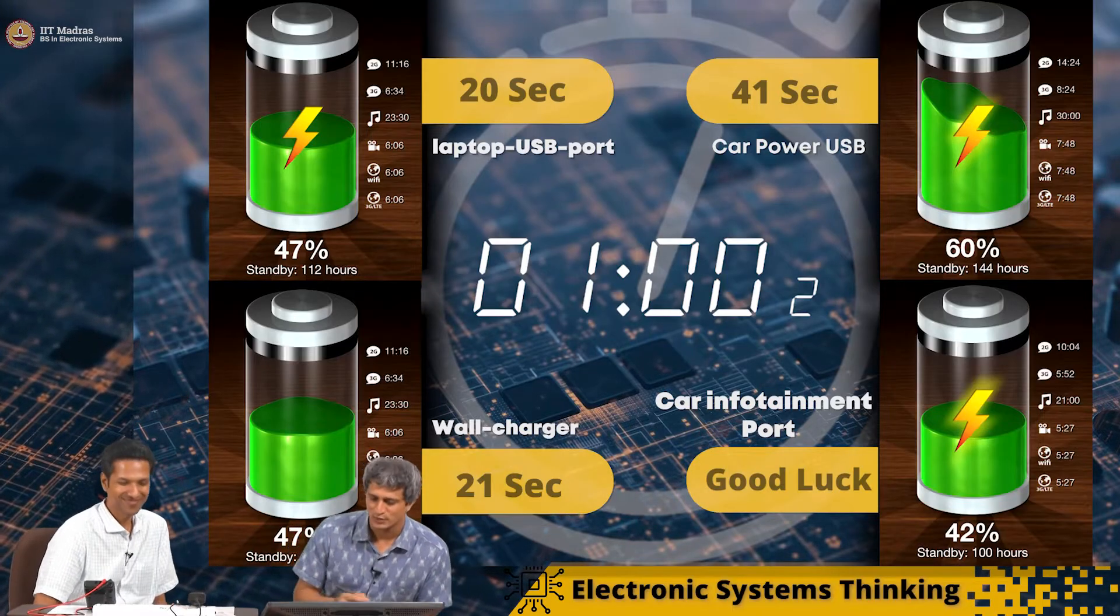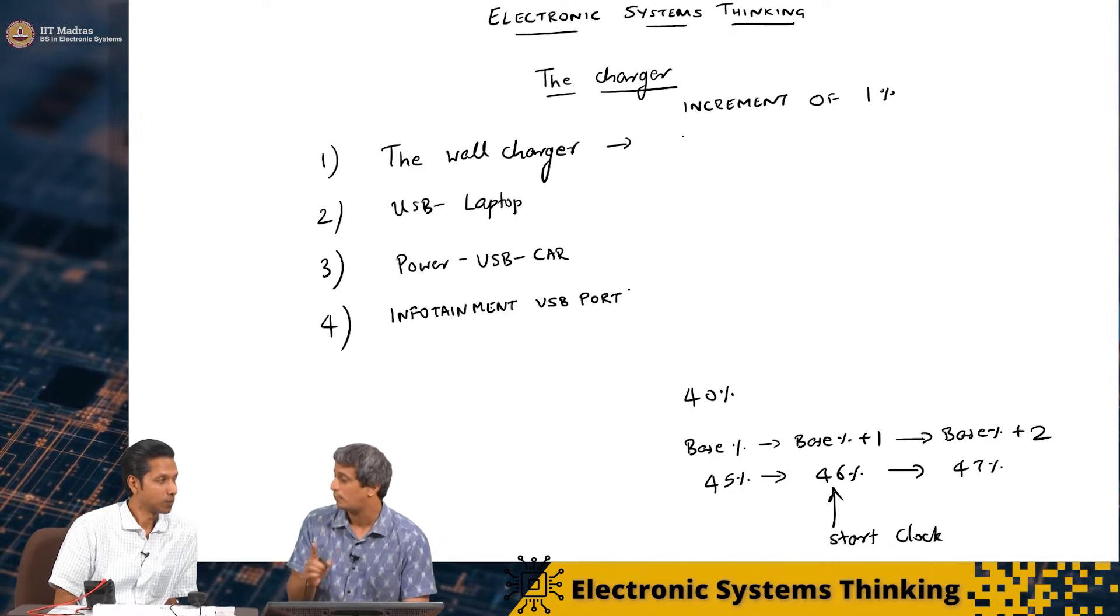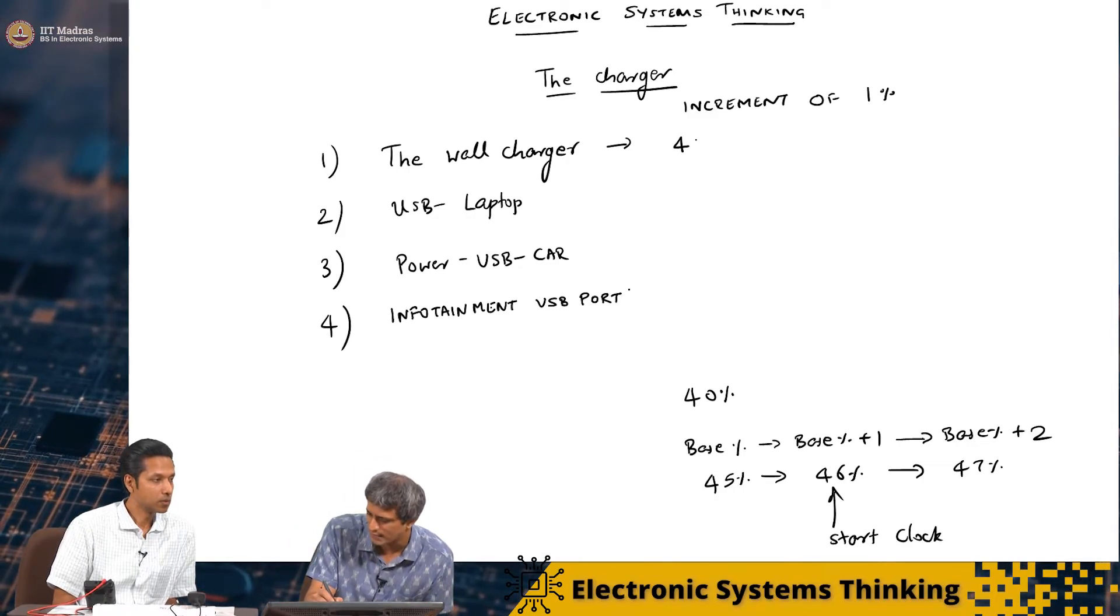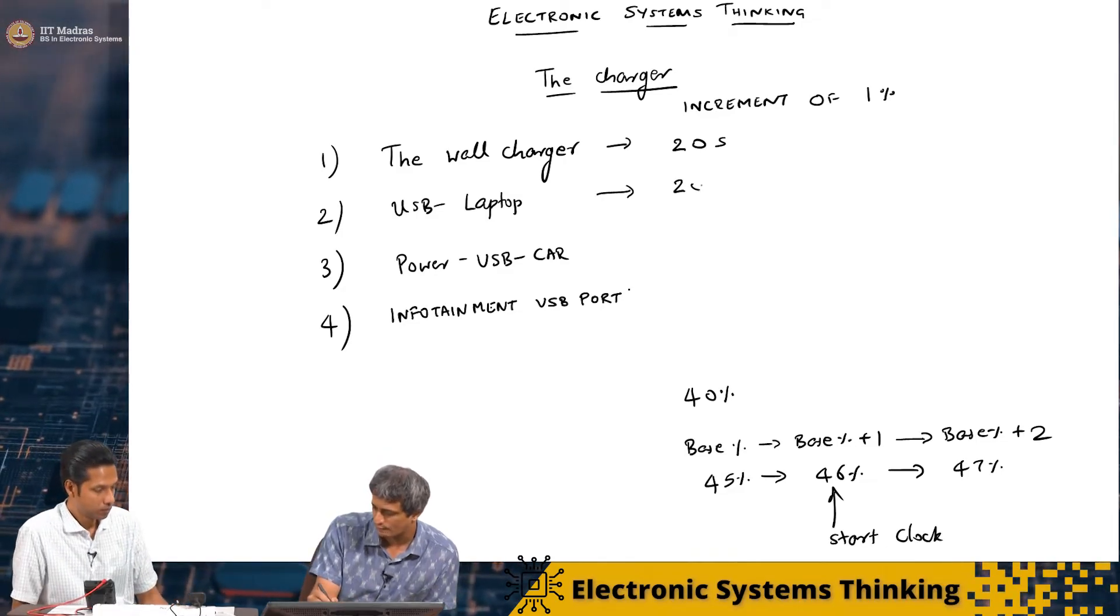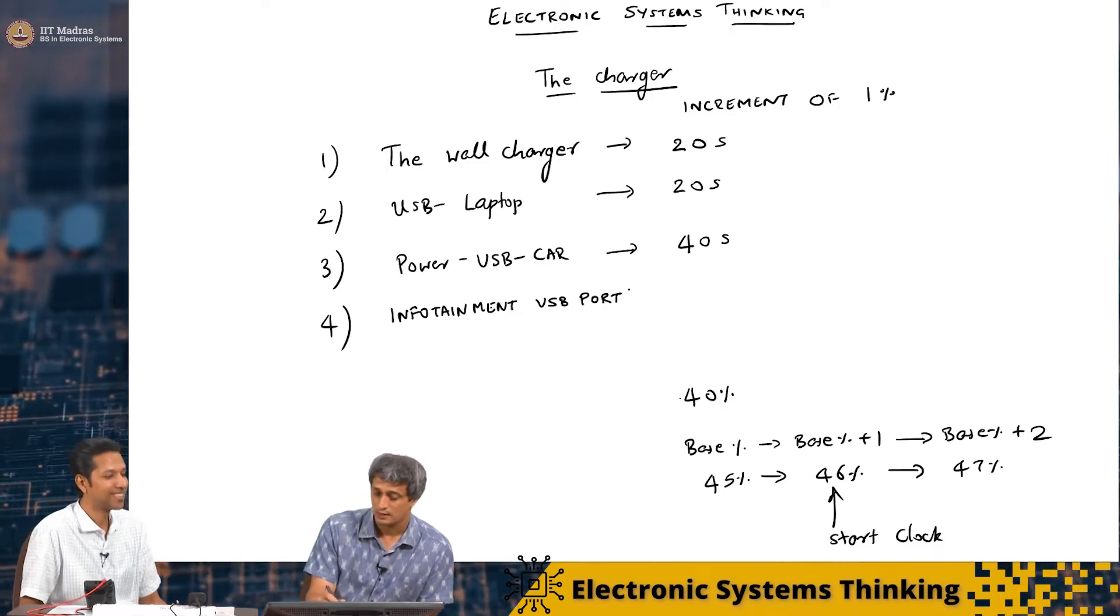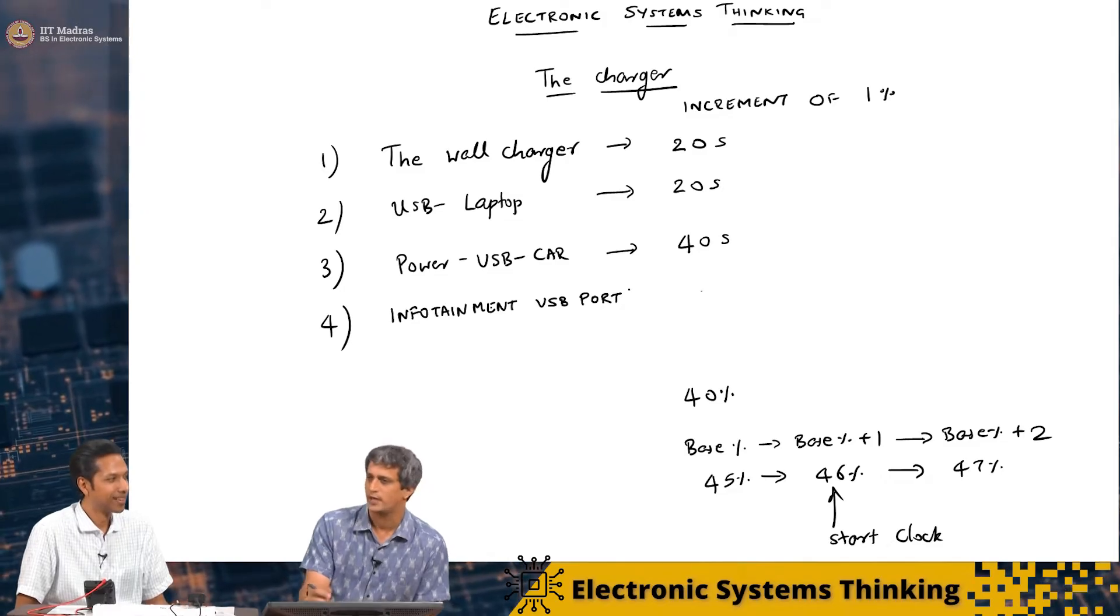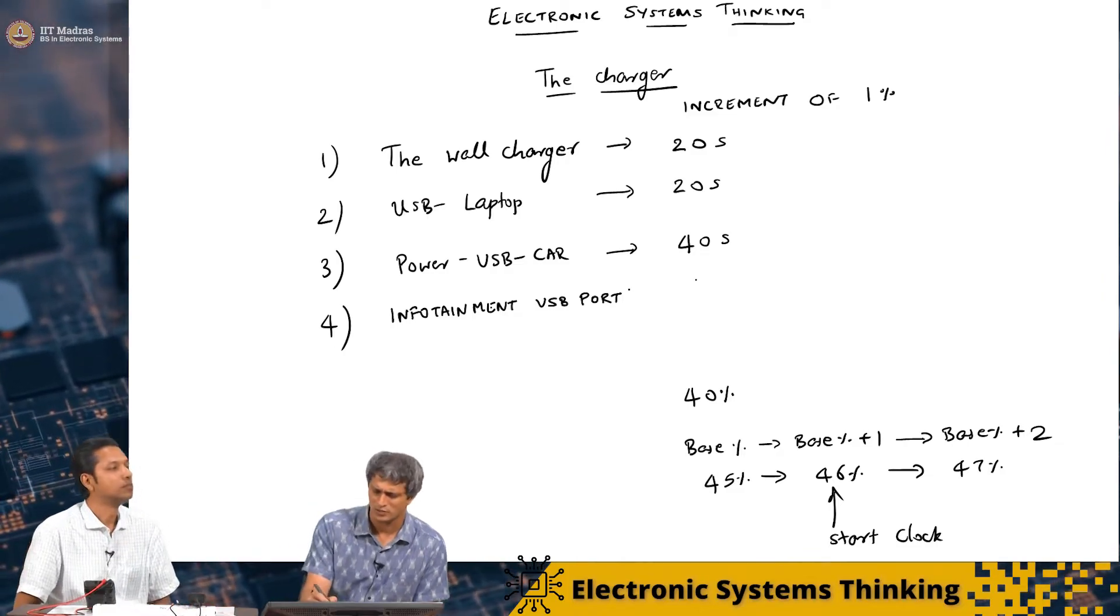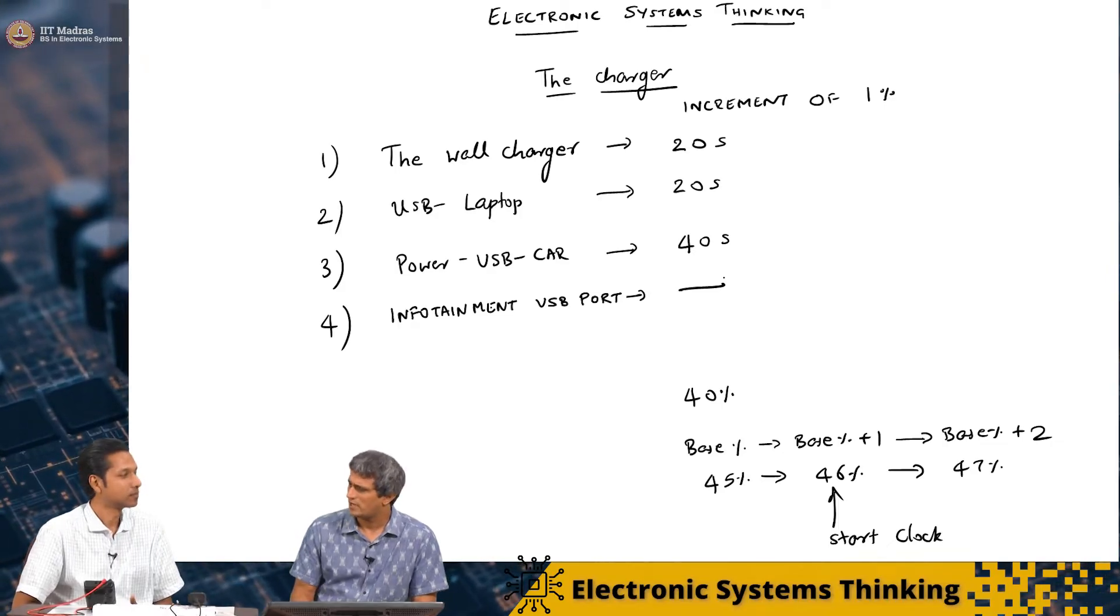And we have got our results back. So what we have is the wall charger was able to charge my mobile—remember it's the same mobile, same battery, nothing else is changing when I go from one charger to the other. It took about, let's not worry about the second decimal, 20 seconds. Likewise the USB on the laptop also took 20 seconds to charge. My power USB from the car took 40 seconds to charge, and you're right, the damn infotainment system did not charge. It just remained the same. I started at some percentage, it went up, it came down, it went up and it came down, and it just was not able to charge. Very small changes, so I mean this is useless. I cannot even use this as a charger, right. It's useless as a charger.